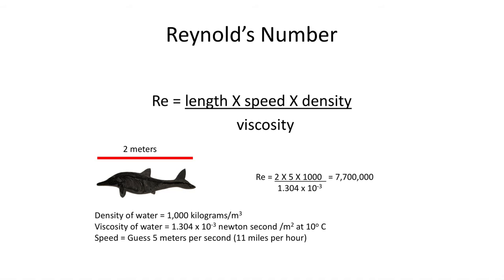In physics we can define a way to measure this effect called Reynolds number. Reynolds number is a dimensionless number defined as the length multiplied by the speed multiplied by the density of the liquid, divided by the viscosity. For example, if we look at an ichthyosaur that is two meters long and use the standard density of water and a speed estimated at 11 miles per hour divided by the viscosity, we get a very large Reynolds number of 7.7 million.